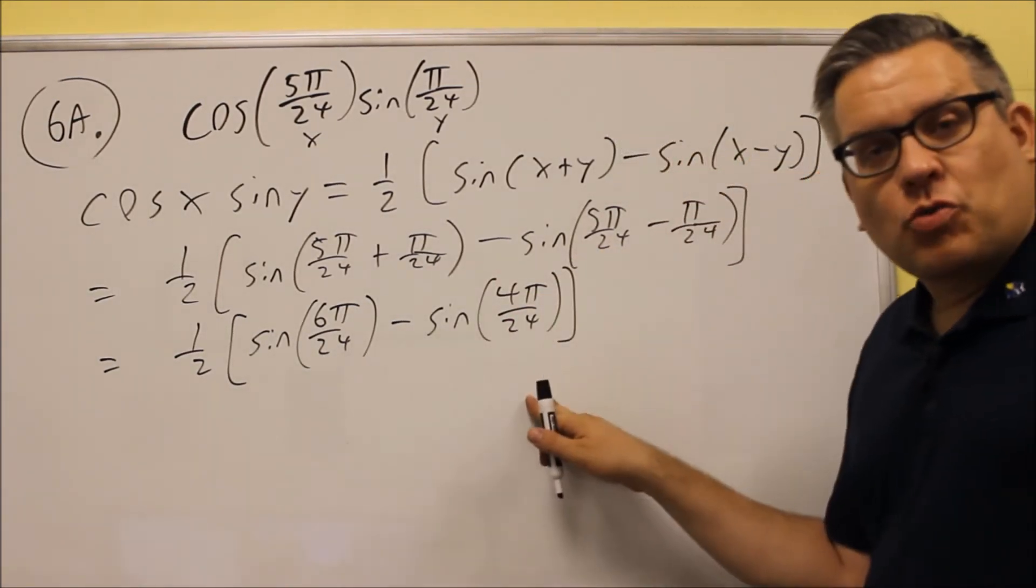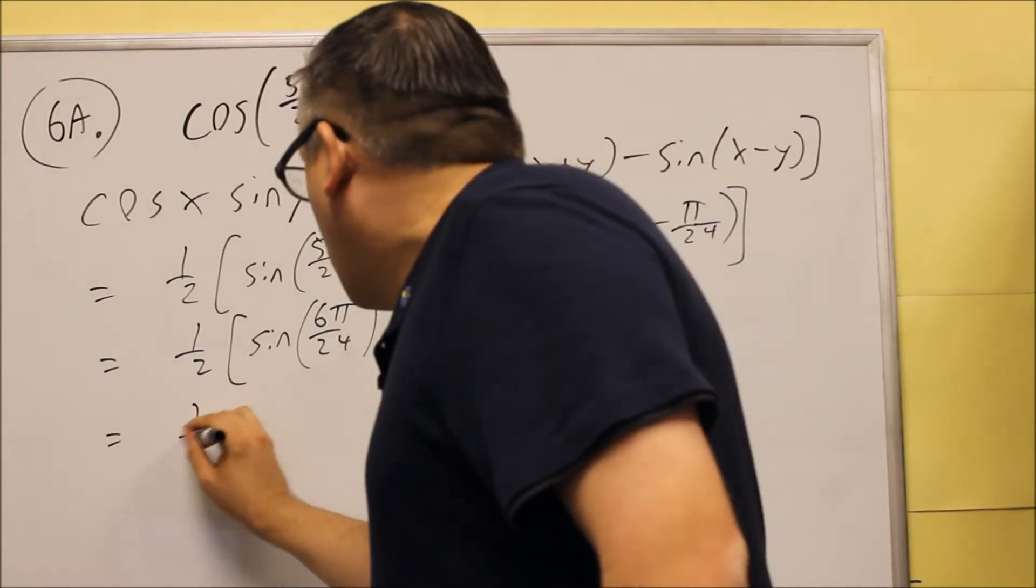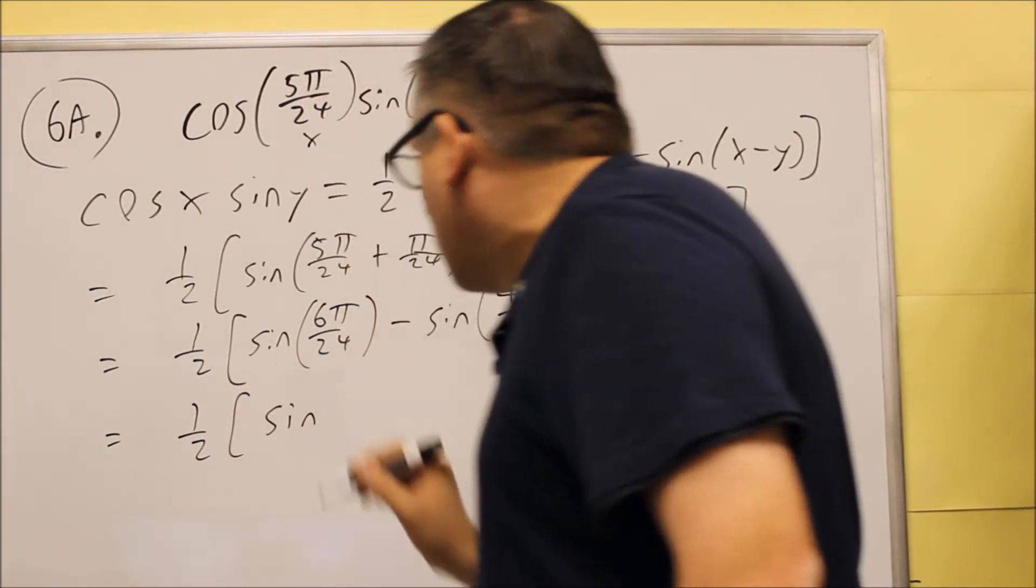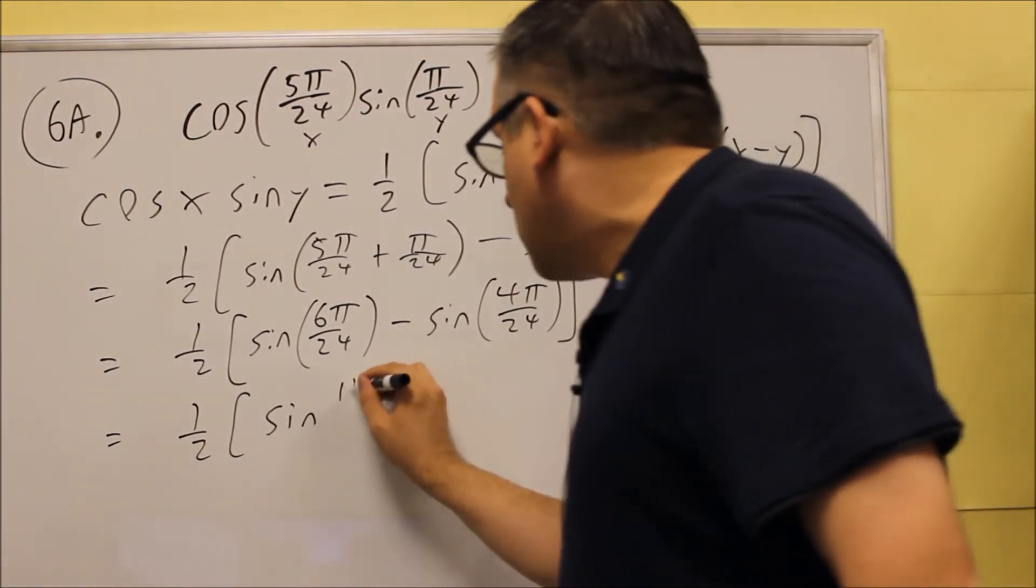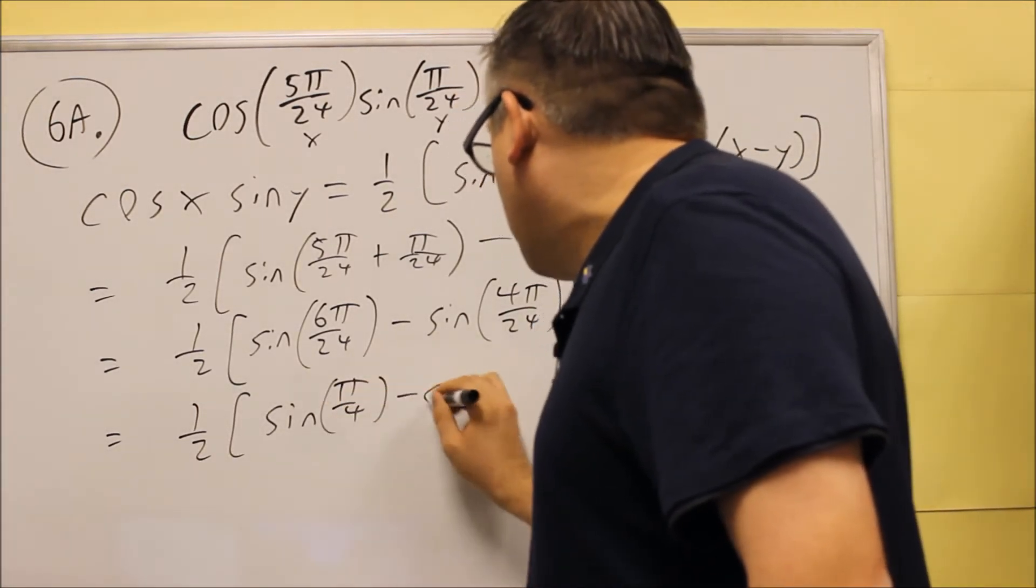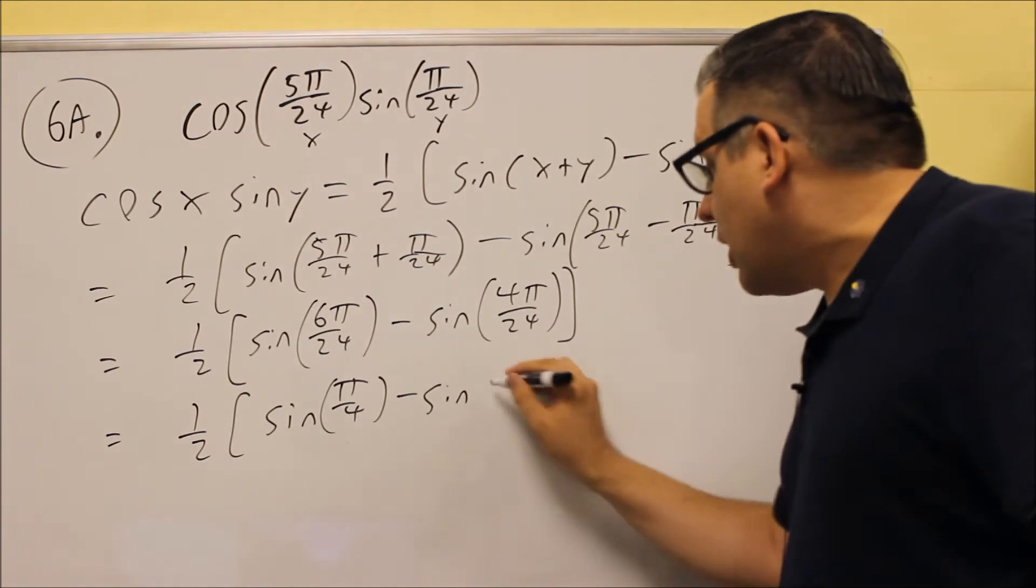And then we can reduce each one of these. So we've got one-half, this will be sine of π over 4, and then minus sine of π over 6.